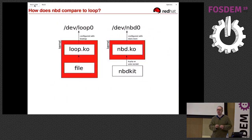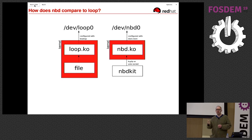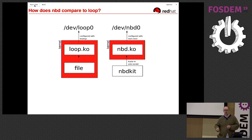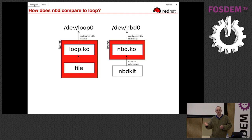How does this differ from loop mounting? In both cases we've got a kernel module. On the left-hand side, loop.ko, configured using 'losetup', creates Linux kernel block devices like /dev/loop0. On the right-hand side, I've got nbd.ko, configured using 'nbdclient', which creates block devices like /dev/nbd0. But the back-end is a little bit different. On the left-hand side, the back-end talks over internal Linux kernel APIs like the VFS to the associated file. On the right-hand side, we've got a user process running.